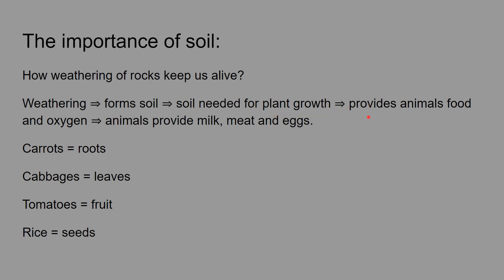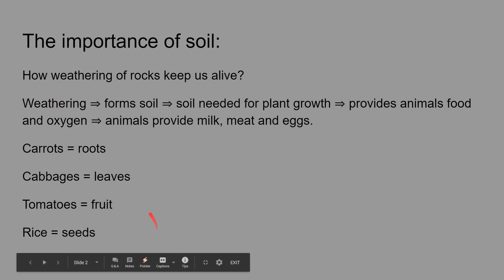Once plants grow, they provide food for animals and also oxygen. These animals get food and further provide us with milk, meat and eggs. Different parts of the plant also give us food.